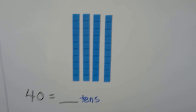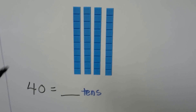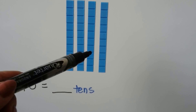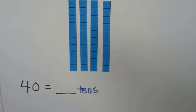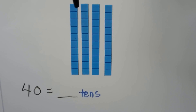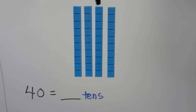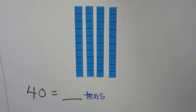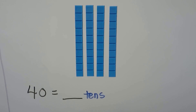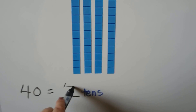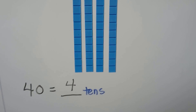So forty ones is equal to four tens and zero ones. We can also have four bars of ten — one, two, three, four. That would be ten, twenty, thirty, forty. That would be four tens for forty.